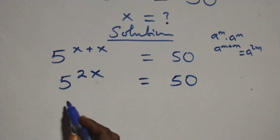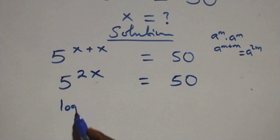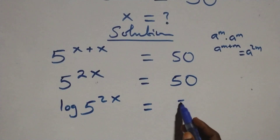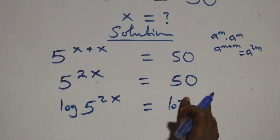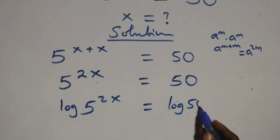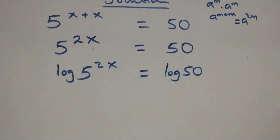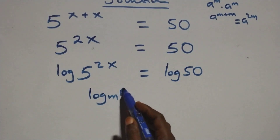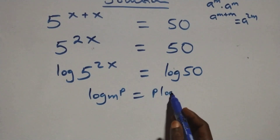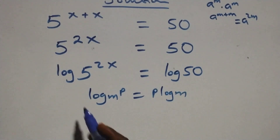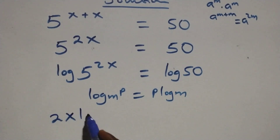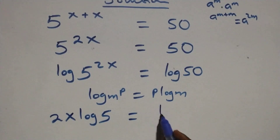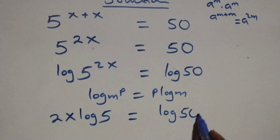Then we take the log on both sides. We have log of 5 raised to power 2x equals to log 50. We apply the power rule of logarithm: when we have log m raised to power p, this is the same thing as p log m. So this becomes 2x log 5 equals to log 50.